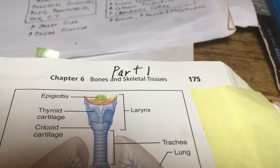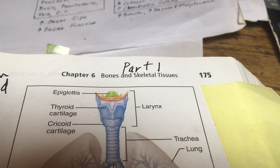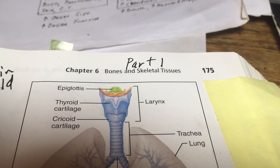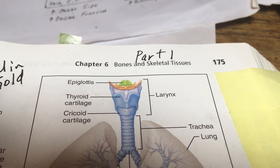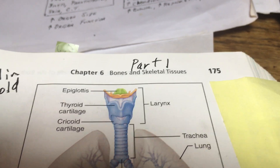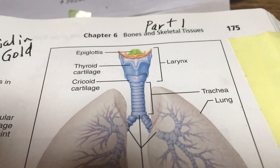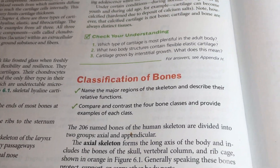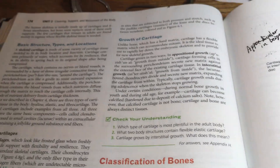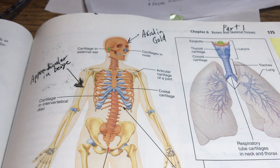Here we go — it's part one of chapter six, and we're dealing with bone tissue. It's page 175, the very beginning of the chapter, just a couple pages back. We're going to want to understand bones in general — the skeletal tissues. Let's take a look.